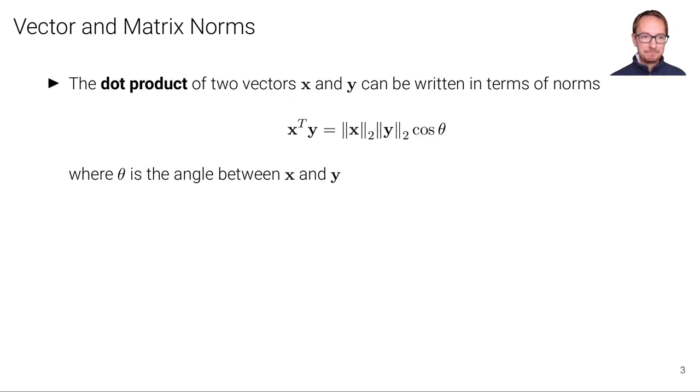Finally, some remarks. The dot product of two vectors X and Y can also be written in terms of norms. So we have X transpose Y equal to the norm of vector X, the Euclidean norm, multiplied with the Euclidean norm of vector Y, times the cosine of the angle theta, where theta is the angle between these two vectors X and Y.